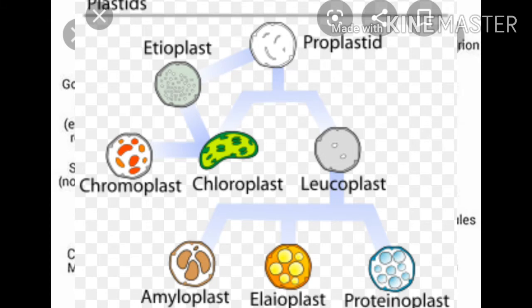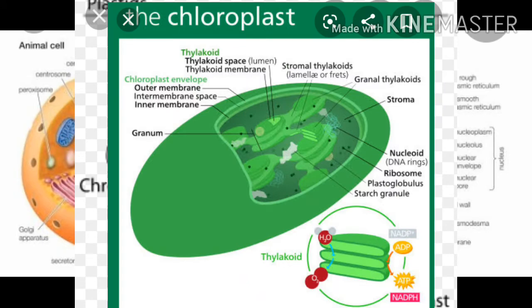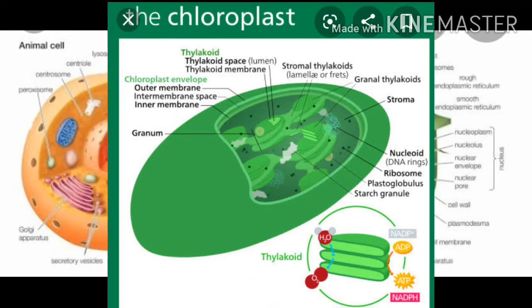The second category is photosynthetically active plastids. These plastids contain colored pigments which are capable of trapping solar energy and help in photosynthesis. Depending upon the pigment present and the color of the chromoplast, they are further divided into three types: chloroplast (green colored), rhodoplast (red colored), and pheoplast (brown colored).